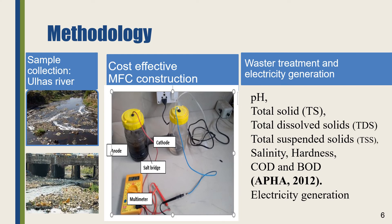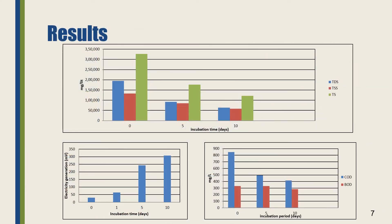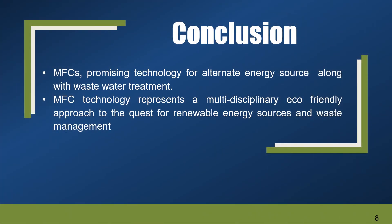During these 10 days, electricity generation was observed. A marked reduction in the pollutant level of the wastewater was detected with respect to total solids, total dissolved and suspended solids. With respect to incubation period, an increase in electricity generation was observed. On day 10, the electricity generated was found to be 300 millivolts. During incubation, a marked reduction in the COD value was also observed, though the reduction in BOD was not as prominent as compared to the COD value. Thus, microbial fuel cells represent a promising technology for generation of electricity along with degradation of pollutant content in the wastewater.